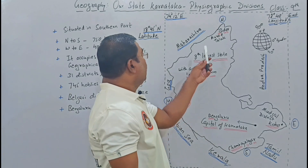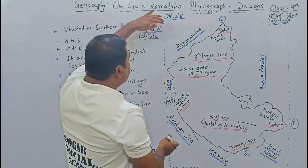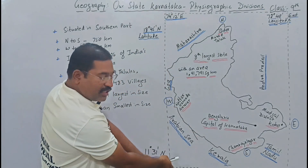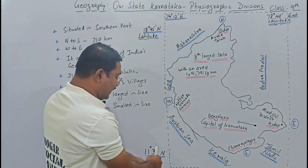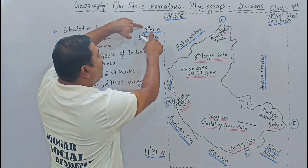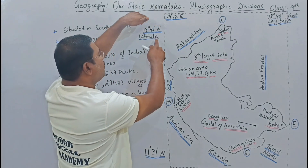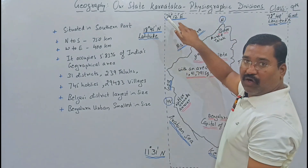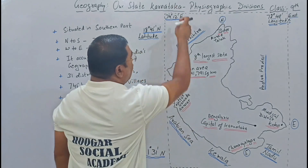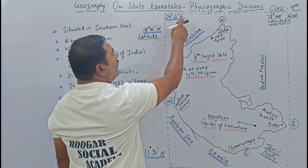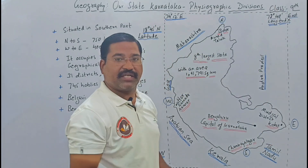For our state Karnataka, from north to south, if we talk about latitudinal lines, we see it extends from 11 degrees 31 minutes north to 18 degrees 45 minutes north latitude. Towards the longitudinal side, it extends from 74 degrees 12 minutes east to 78 degrees 40 minutes east longitude. Within these coordinates lies our state Karnataka.